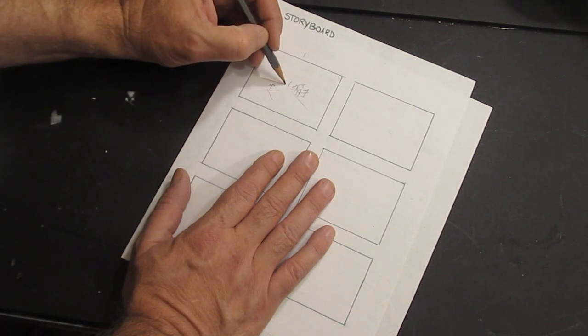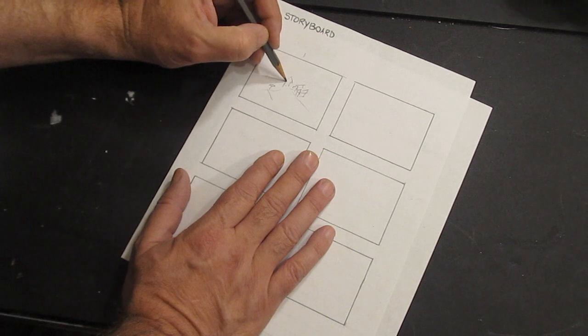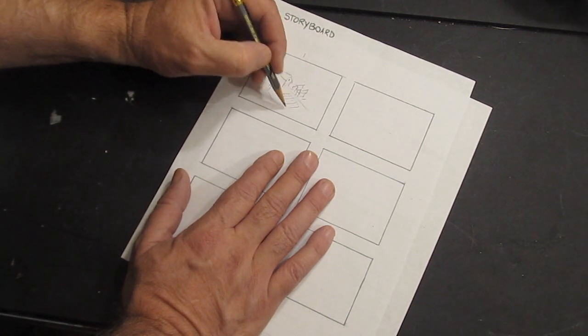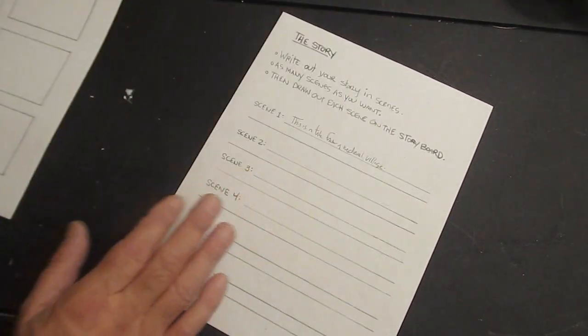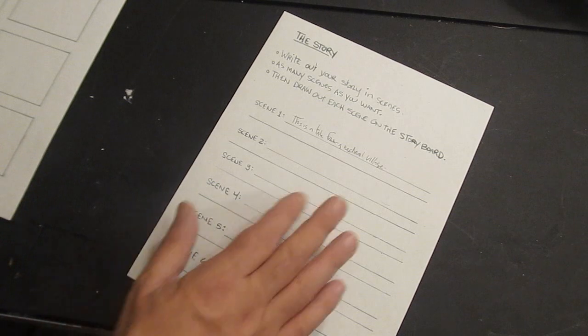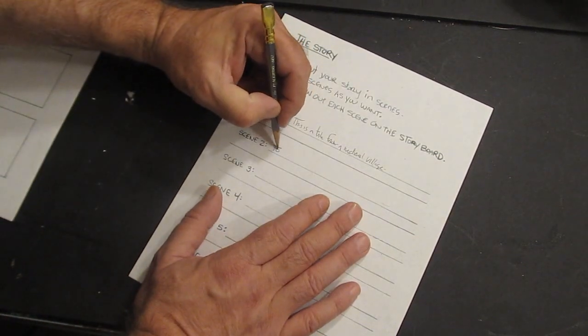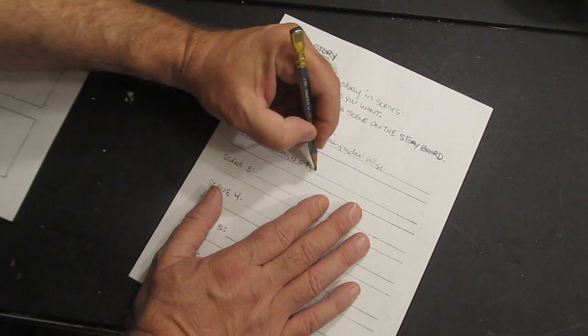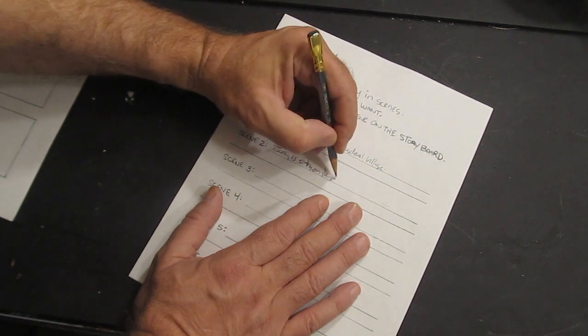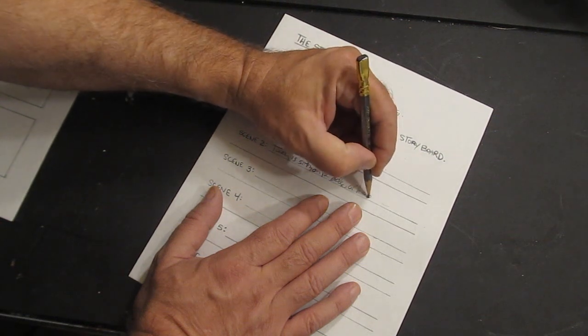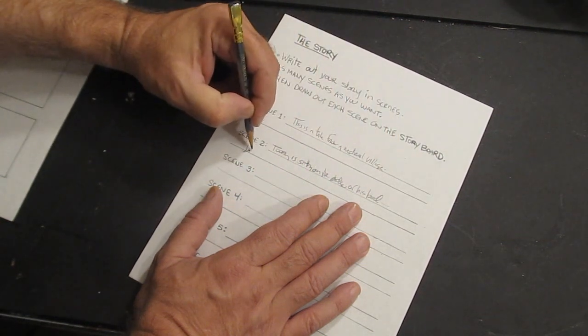And then you draw out a quick sketch on the storyboard to try to visually display that scene. And this is pretty much the way they do it in Hollywood movies and anything. You write out your story, break it up into pieces, draw it up in short scenes like this. And see now I'll move on to scene two, write a little bit about that story, that scene.